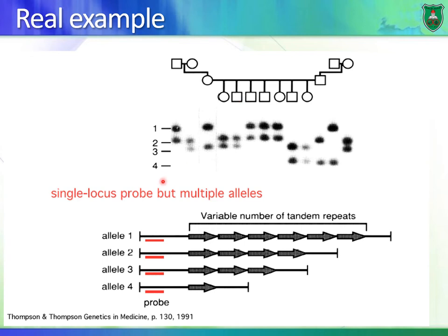If we look at this family and examine a certain VNTR, we notice there are four different alleles. Allele number one is having six repeats, allele number two is having four repeats, allele number three is having three repeats, and allele four is having one repeat only.